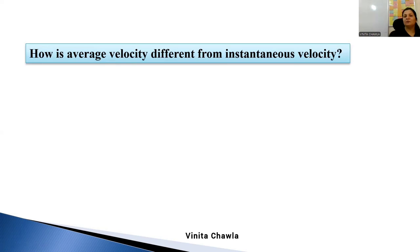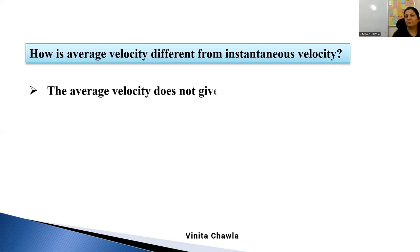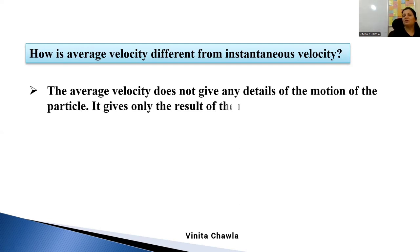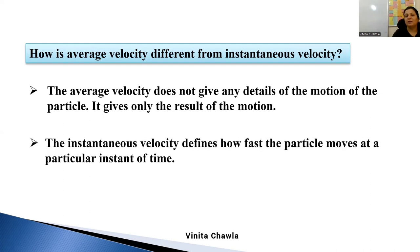How is average velocity different from instantaneous velocity? Average velocity is total displacement upon total time taken. Average velocity does not give any details of the motion of the particle — it gives only the result of the motion. Instantaneous velocity defines how fast the particle moves at a particular instant of time.